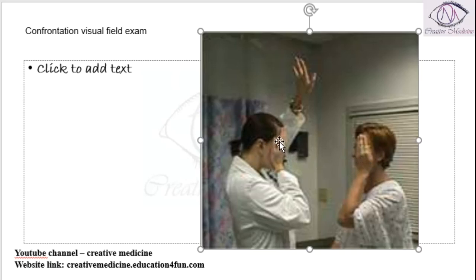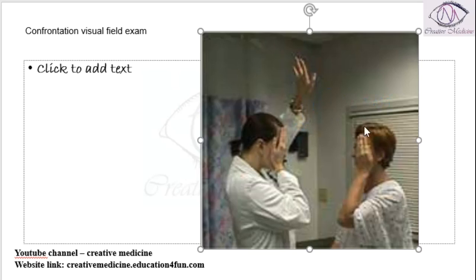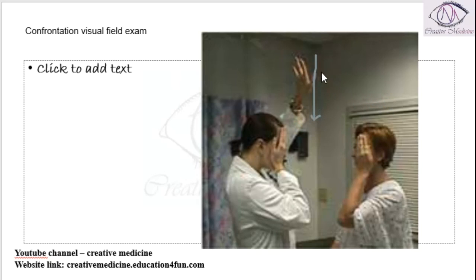The doctor will ask the patient to look at his eyes only. Then the doctor will put his hand above, to the right side, to the left side, and below — moving from above downwards. The doctor will bring the hand downwards and ask the patient to tell him where he can see the hand.